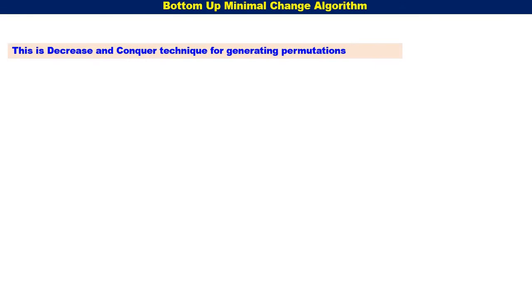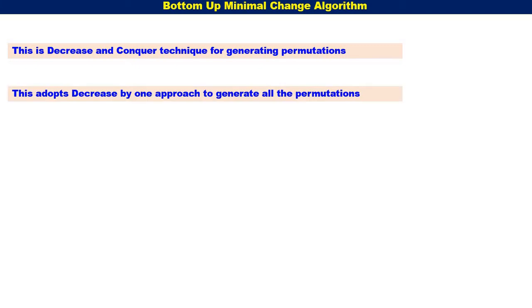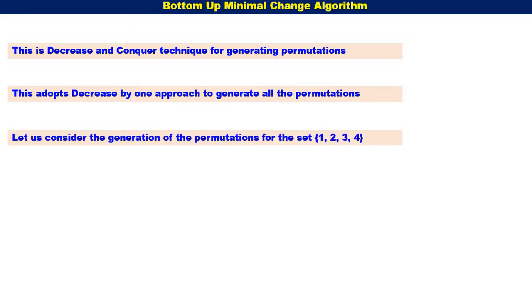My dear students, let us discuss the bottom-up minimal change algorithm. This algorithm uses the decrease and conquer technique for generating permutations. Also, it adopts a decrease by one approach to generate all the permutations.